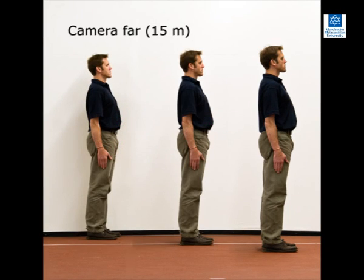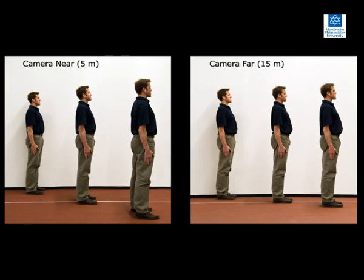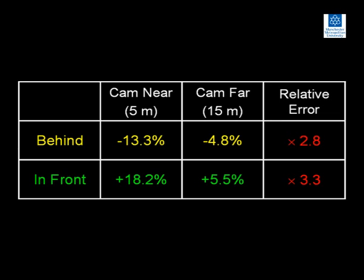With the camera in this position, the performer appears to be slightly smaller when standing behind the plane of motion and slightly larger when standing in front of it. When standing 0.5 metres behind the plane of motion, the measured height of the performer was 1.72 metres, which is 4.8% less than when measured in the plane of motion. When standing 0.5 metres in front of the plane of motion, the measured height was 1.91 metres, which is 5.5% greater than when measured in the plane of motion. Comparison of images recorded in both camera locations re-emphasises that the error involved in measuring the length of objects when they move out of the plane of motion is greatly reduced when the camera is further away. With the camera in the far position, the percentage error in the measured height of the performer when standing behind the plane of motion was 2.8 times less than with the camera in the near position.